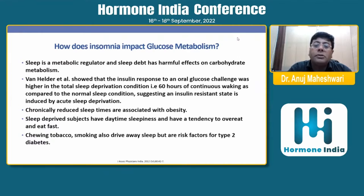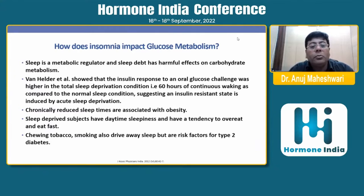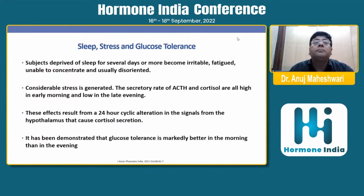Chronically reduced sleep times are associated with obesity and illness. Once sleep is deprived, subjects develop daytime sleepiness and a tendency to overeat and eat fast. It is also seen that chewing tobacco and smoking drive away sleep, and these are also risk factors for type 2 diabetes. Subjects deprived of sleep for several days become irritable, unable to concentrate, and usually disoriented.